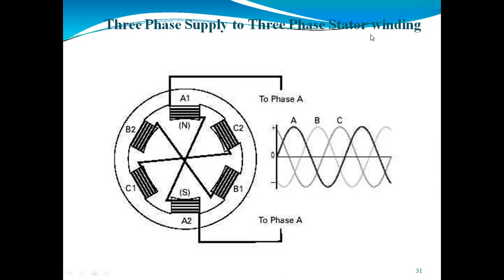We are giving the three-phase supply to the three-phase stator winding. We have already seen the construction of the three-phase induction motor. It consists of a stator and rotor. The stator has a stator frame, stator winding, and stator core. The rotor is the main winding, or we can say the armature winding. When we give three-phase supply, we use the RYB phase sequence.